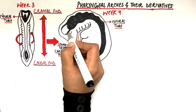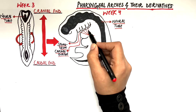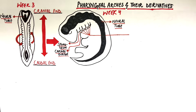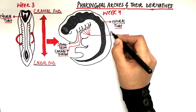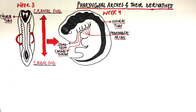Lateral to the stomodeum and just above the cardiac bulge, six pairs of well-defined outgrowths called the pharyngeal arches develop by week 4. These pharyngeal arches are a proliferation of the mesodermal germ layer infiltrated by the neural crest cells.